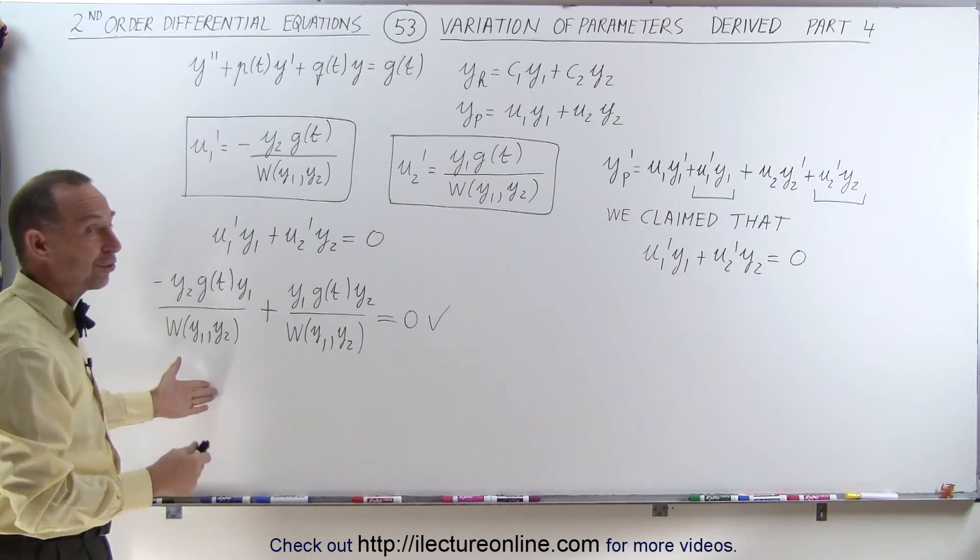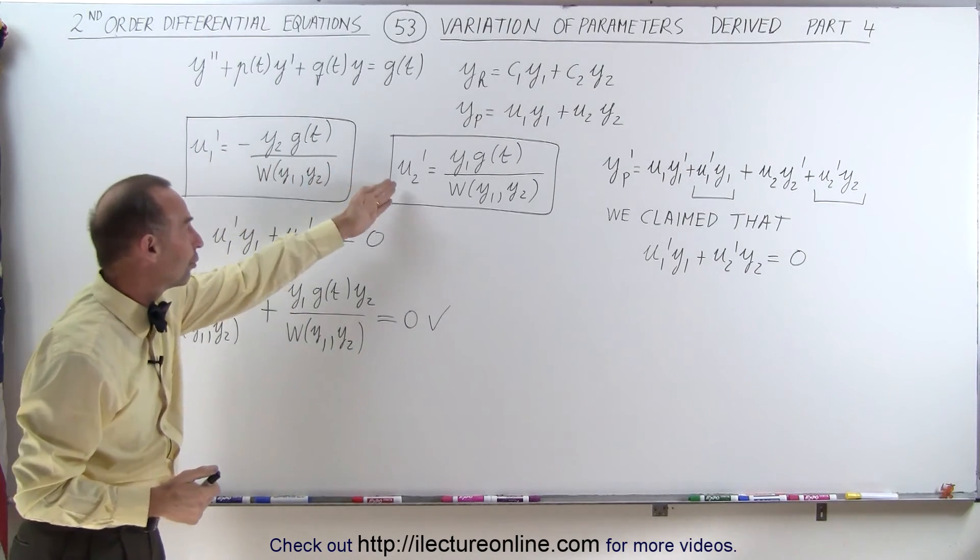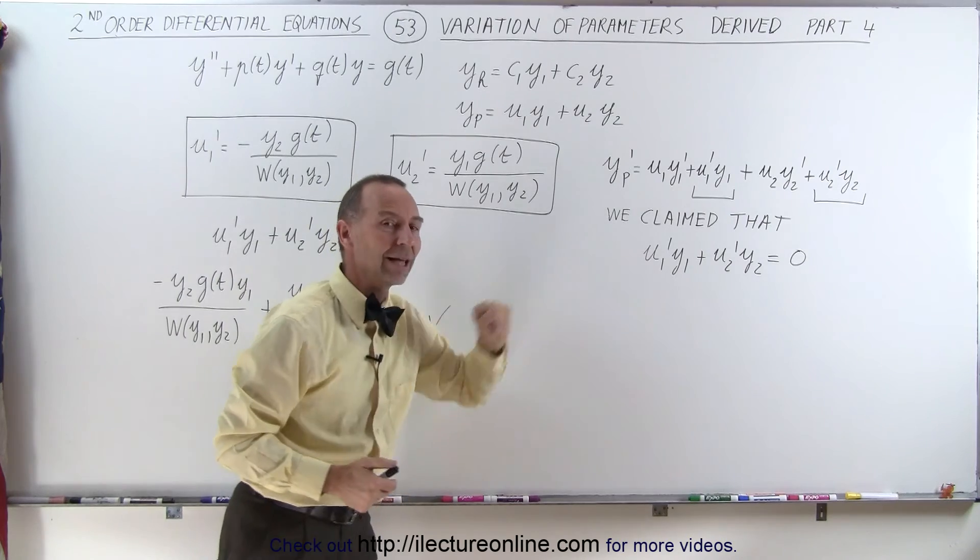But here I can show you that it was not just a random guess. We knew that later on, when we found the solution for u1 prime and u2 prime, that this was indeed the case, and we can claim that to be true.